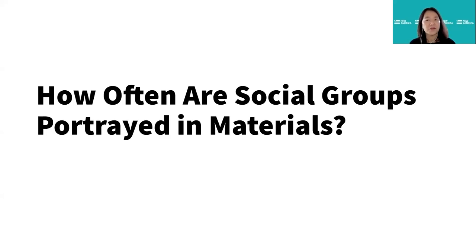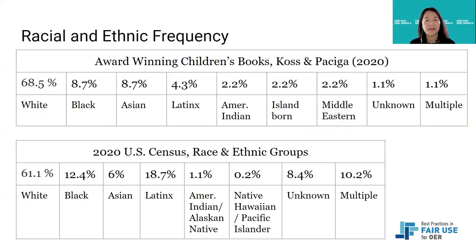So how often are these social groups actually portrayed in materials? This table represents what you see when you compare a study done on award-winning children's books with census groups. There are some places where representation is fully lacking — like Latino/x, which is 18.7% of the census but only 4.3% of award-winning book representations. You also see large categories of unknown and multiple, almost 20%, that have not been identified in any way, shape, or form.